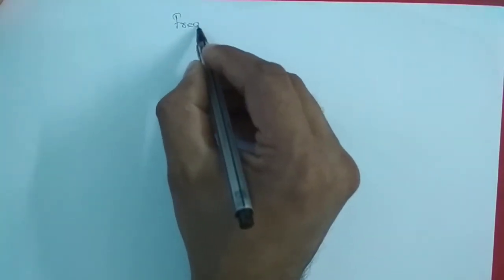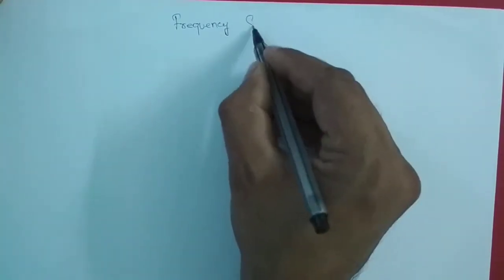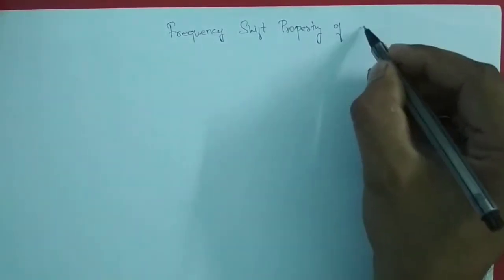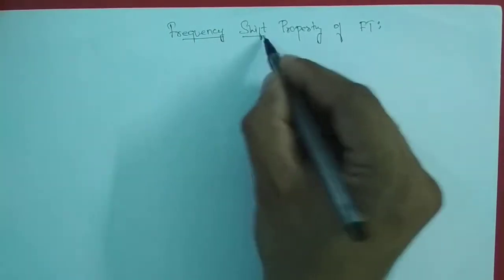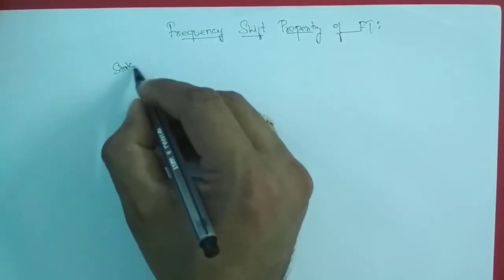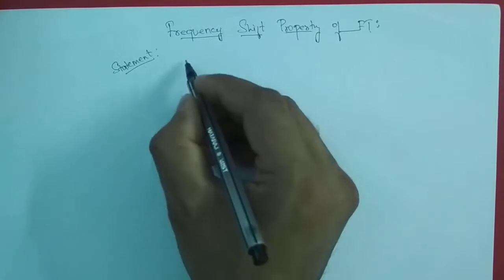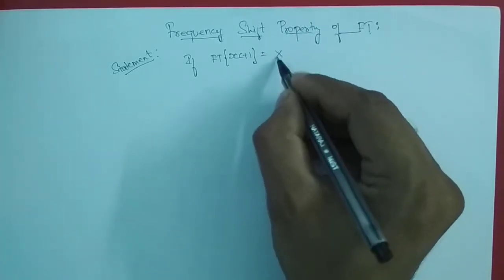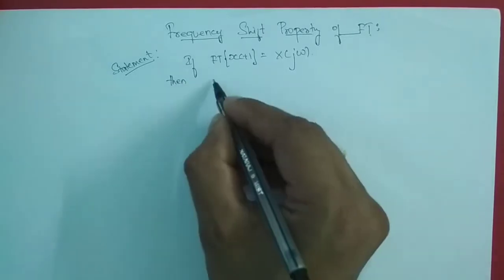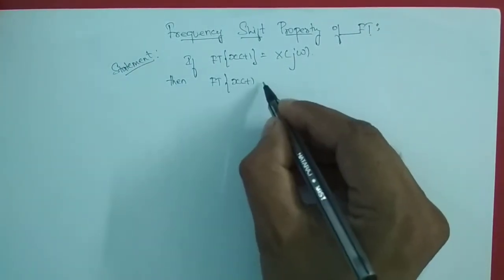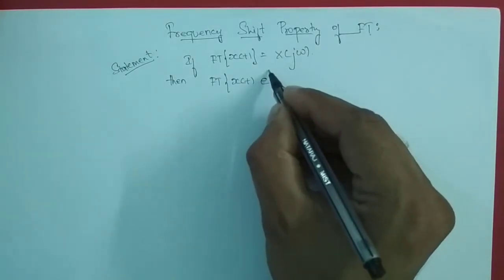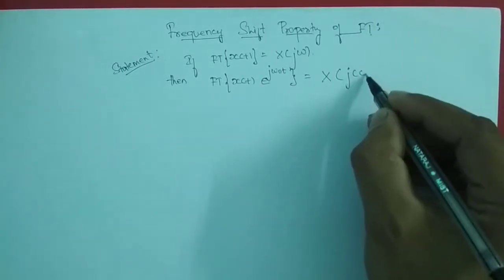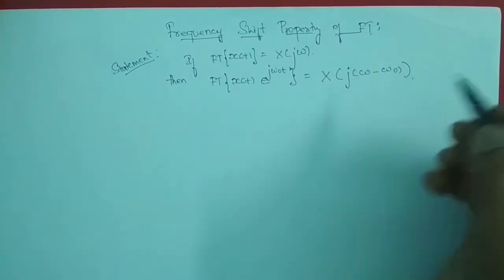We will prove the frequency shift property of the Fourier transform. The statement is: if the Fourier transform of x(t) is equal to X(jω), then the Fourier transform of x(t) multiplied with e^(jω₀t) is equal to capital X of j(ω − ω₀).